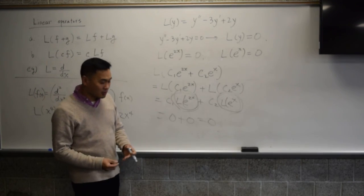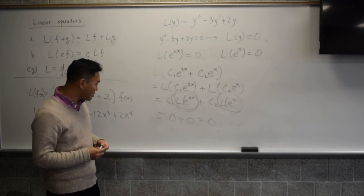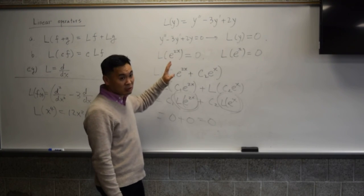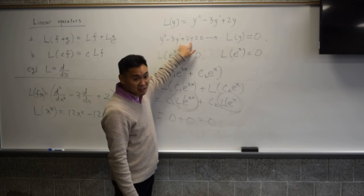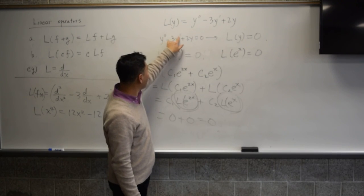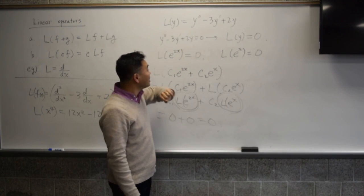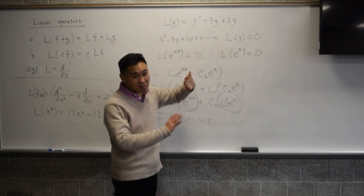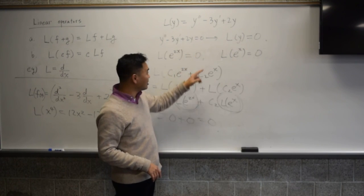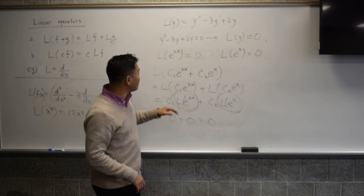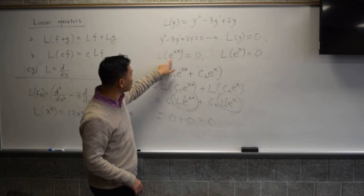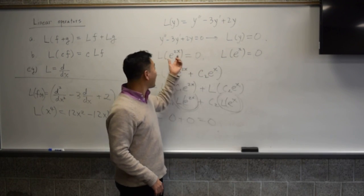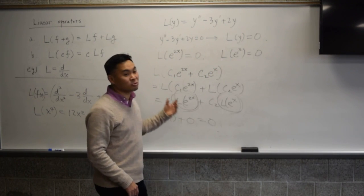This is really important. When you see a differential equation, figure out: is the operator on the left side linear? It is, if you only have derivatives with constant multiples. Is it homogeneous — meaning are you looking for where it equals 0? If yes, then find solutions that produce 0. If you find two of them, take their linear combination and you get the general solution.